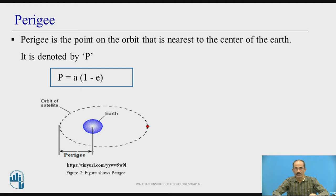Perigee is the point on the orbit that is nearest to the center of the earth, and it is denoted by capital P. It is given by capital P equal to small a into (1 minus e). From the center of the earth, the point on the orbit which is closest to the center of the earth — that distance is called the perigee. When the satellite comes to this point, which is the closest distance from the earth's center, that is the perigee.